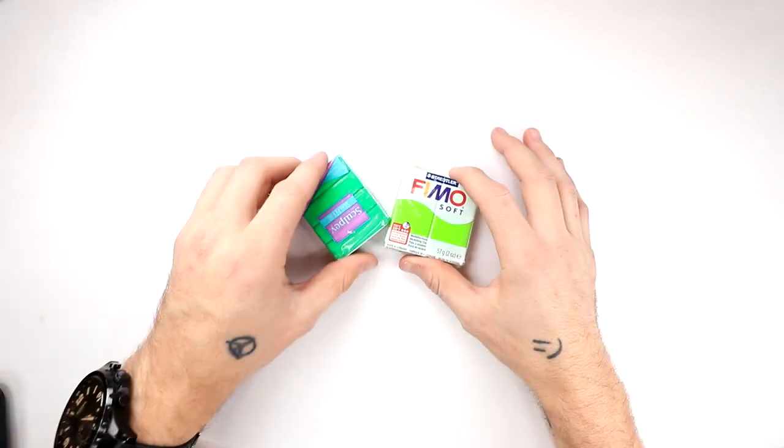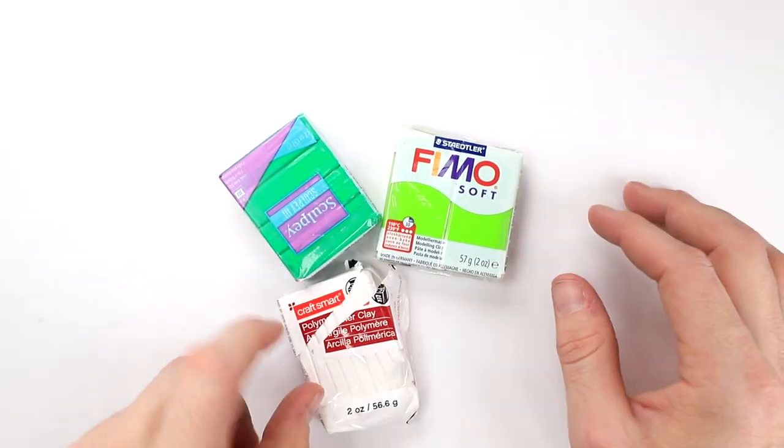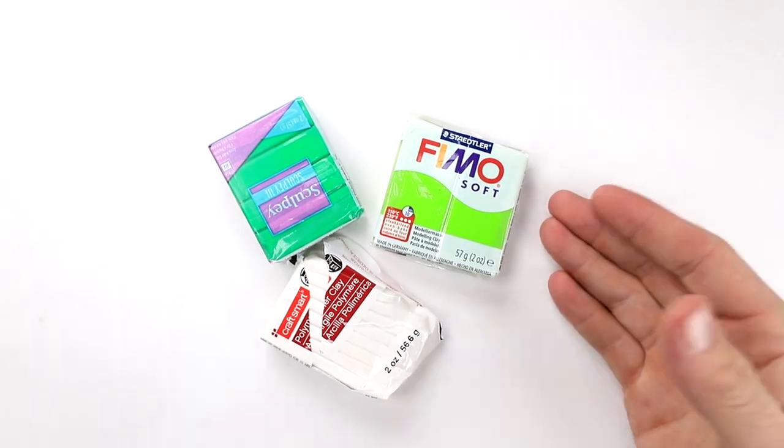Okay, so for the little slime guy, we're gonna need some green, a little bit of white, and yeah, that's pretty much it.